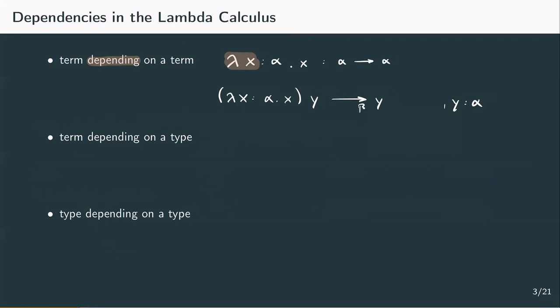A term depending on a type means something only slightly different. We have a term x of type alpha, but this time we add an abstraction over the type, so lambda x of type alpha dot x could be generalized to lambda type alpha dot lambda x of type alpha dot x. With this, the term is not restricted to a specific type but is able to use any type in place of alpha. This term cannot be definitively evaluated until we apply it to a fixed type like sigma, so this term now depends on a type. Beta reduction would give us lambda x of type sigma dot x.